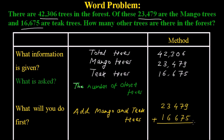9 plus 5 is 14, so we carry 1. 1 plus 7 plus 7 is 15, carry 1. 1 plus 4 plus 6 is 11, carry 1. 3 plus 1 plus 6 is 10, carry 1. 1 plus 2 plus 1 is 4. So mango and teak trees together are 40,154.